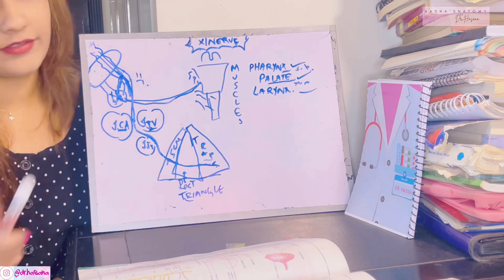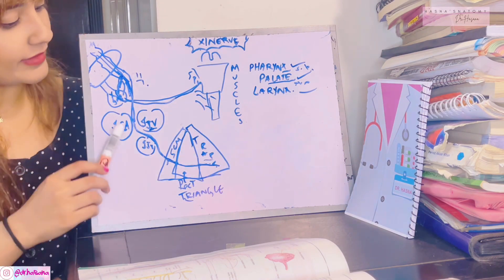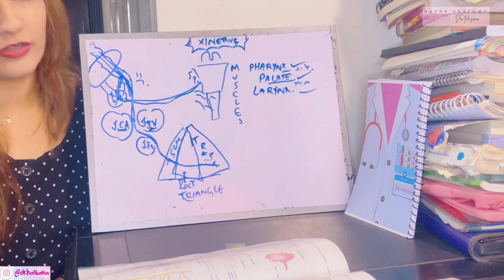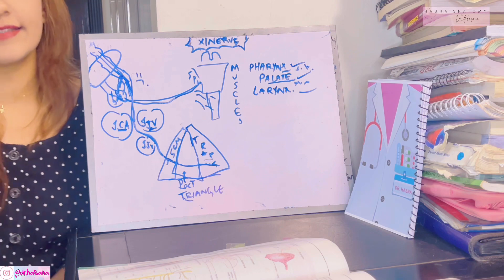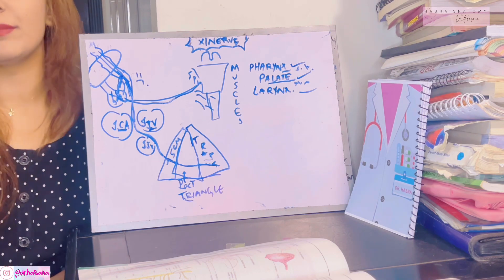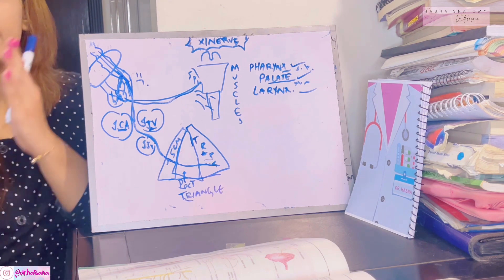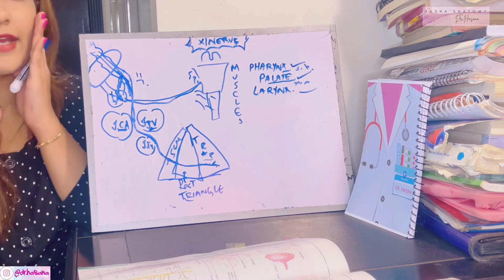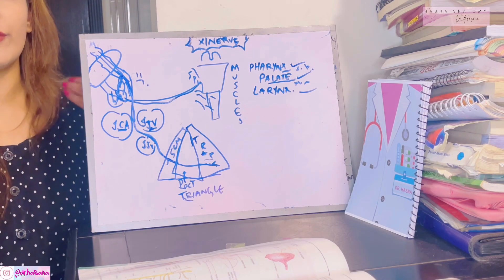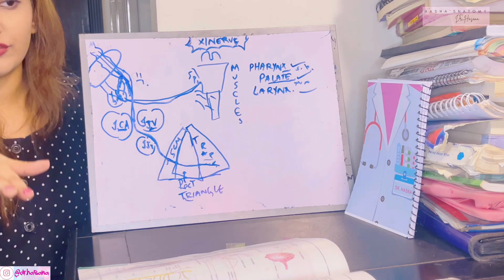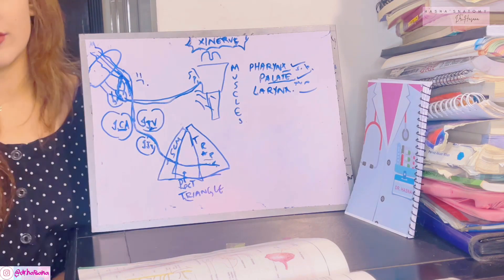In summary, the cranial root goes to the palate, pharynx, and larynx, while the spinal root goes to the sternocleidomastoid and trapezius. In a lesion of the accessory nerve, chin turning becomes a problem because the sternocleidomastoid is paralyzed — the patient cannot turn their chin against resistance. There is also loss of power in shrugging the shoulders due to trapezius paralysis.